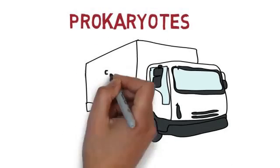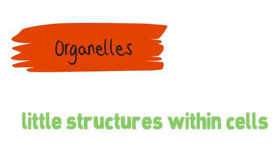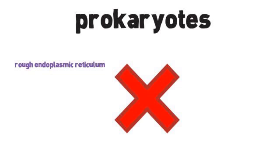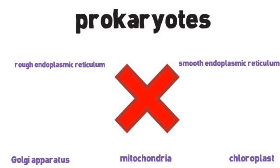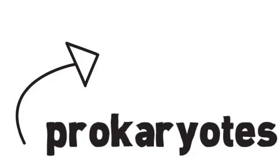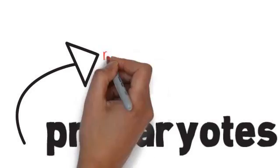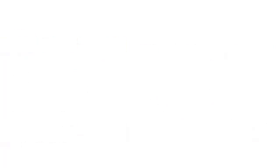In prokaryotes, you'll find there aren't a lot of cell organelles. Organelles are the name we give to the little structures that we find within cells. In prokaryotes, there would be no rough endoplasmic reticulum or smooth endoplasmic reticulum. There's no Golgi apparatus, no chloroplast, and no mitochondria. Everything is respirational. So in prokaryotes, the respiration happens in the walls. The walls of the membrane are called the mesosome.